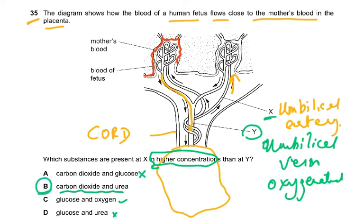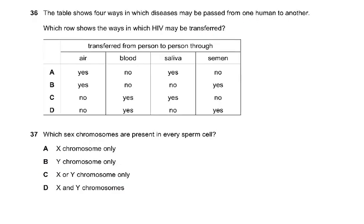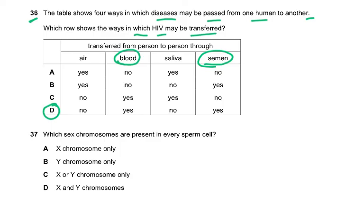Question 36: which row shows the ways in which HIV may be transferred? HIV is a virus and cannot be transferred by air or coughing. There must be mixing of body fluids. HIV can only pass through blood and semen, so the answer is D. Saliva cannot carry HIV because the virus is in your blood — the body fluids must come into contact from an infected to an uninfected person.